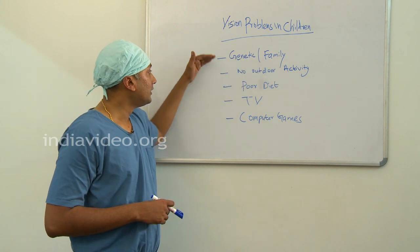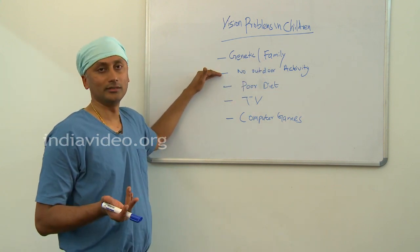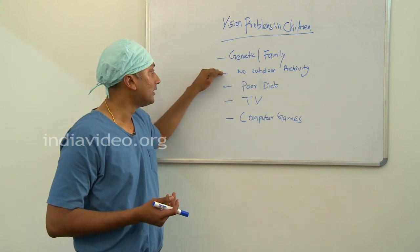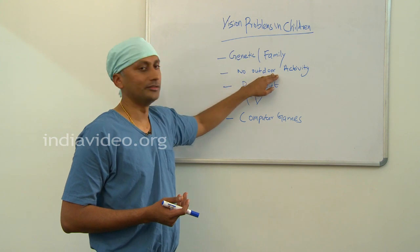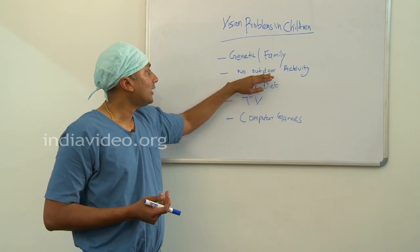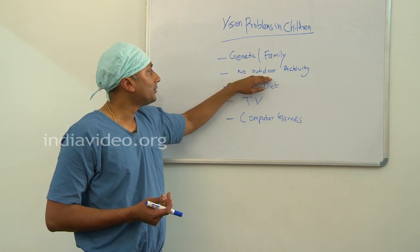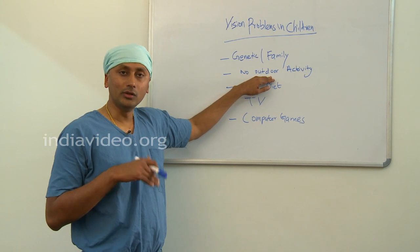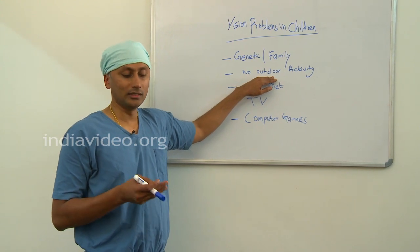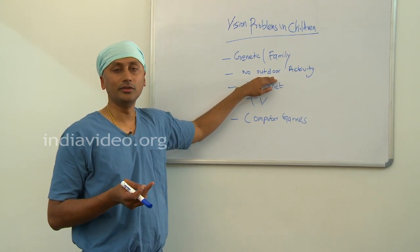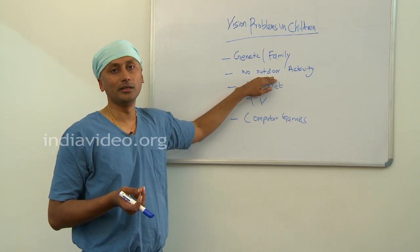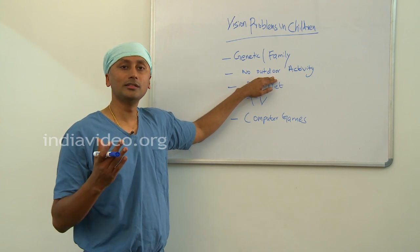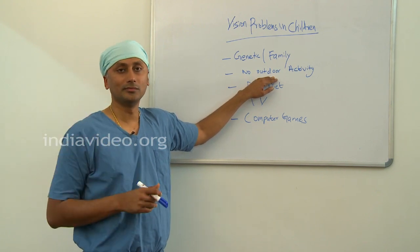The important among the modifiable factors that we can address is outdoor activity. A child mostly spending time indoors nowadays, either reading books, watching TV, or playing computer games, has no necessity to develop far vision.